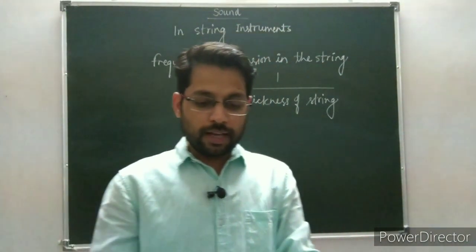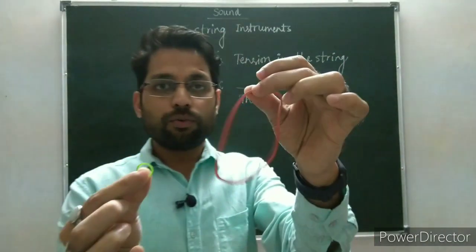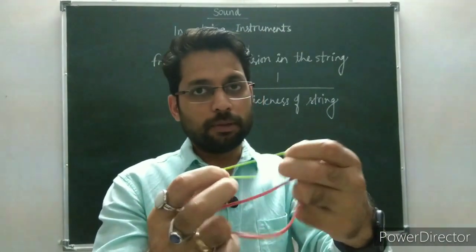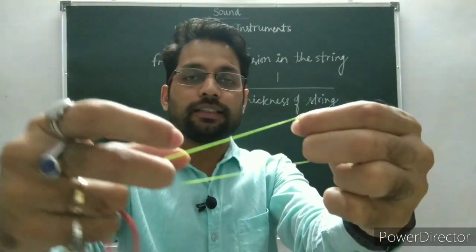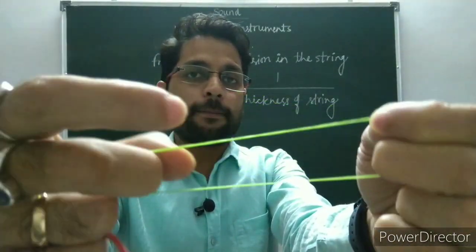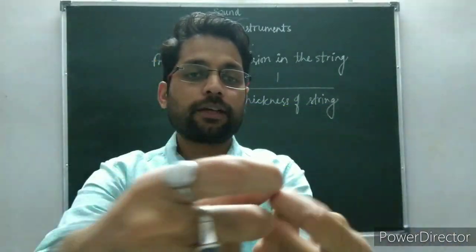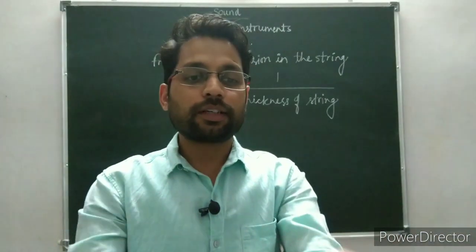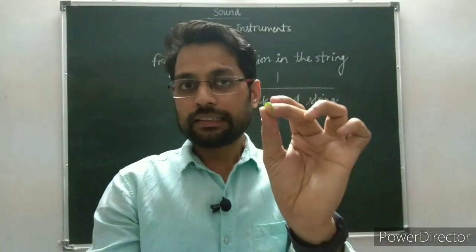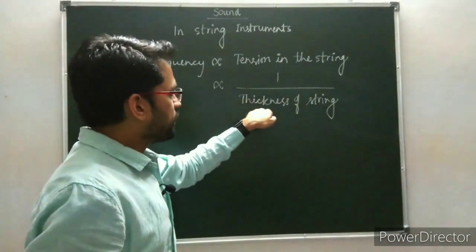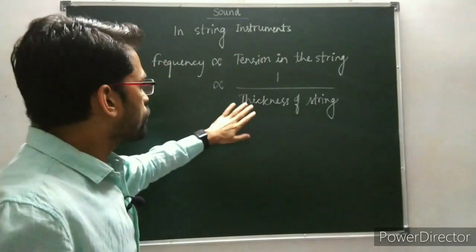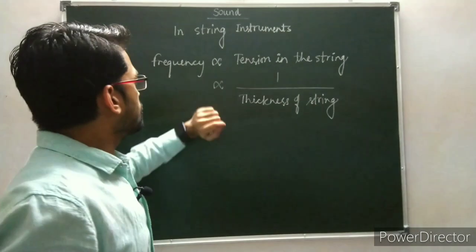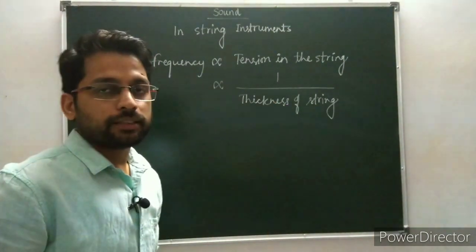For this, I have two rubber bands — one is thick, the other is thin. I am going to produce sound from both. This is the thin one — listen. Now listen to the thick rubber band. The thin one was shrill. So when the thickness decreases, the frequency increases. This verifies that the frequency in string instruments is inversely proportional to the thickness of the string.